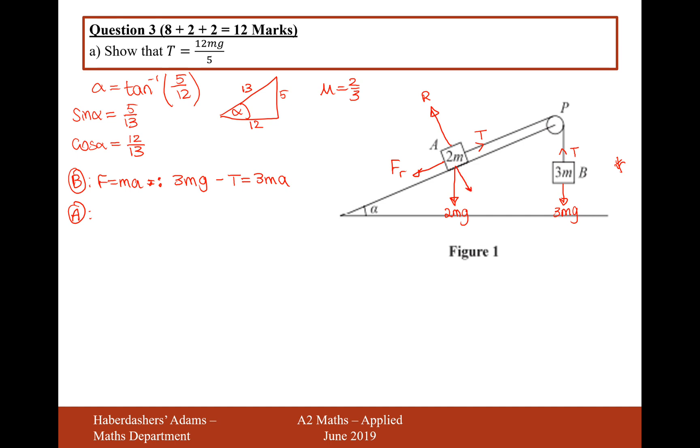So for R, we need the balancing force with R, which is this force here. Given the angle alpha is here, this force is going to be... we treat this like a triangle. We've got a right-angled triangle here. The right angle is here. This 2MG force is treated as the hypotenuse. We want the adjacent side, so that's 2MG cos alpha. Cos is the function that links the adjacent and the hypotenuse together. The other one down here is going to be 2MG sin alpha. Resolving the forces perpendicular to the plane, R equals 2MG cos alpha. Cos alpha is 12 over 13, so that's 24MG over 13.